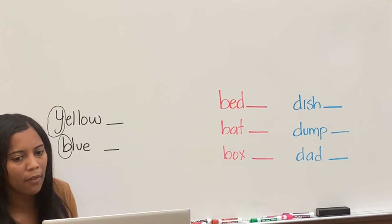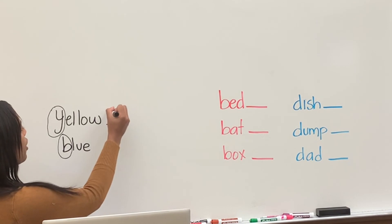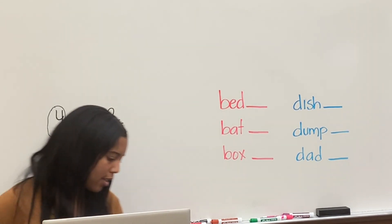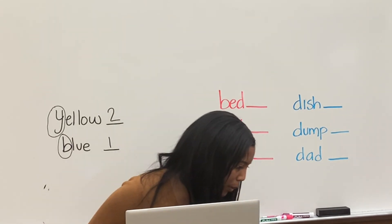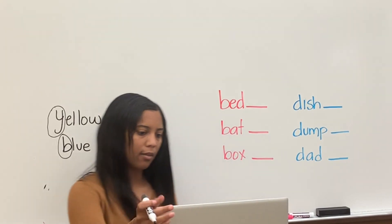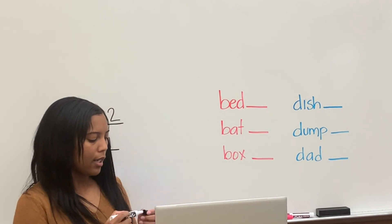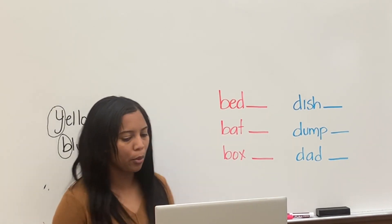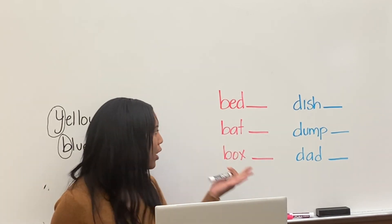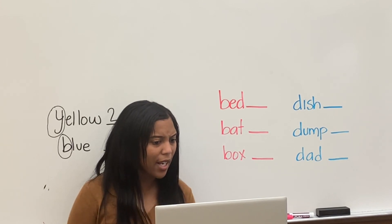Evan, which one would go first? B. So blue would be first and then yellow would be second. That is correct. Now we're going to learn a different way to put words in ABC order. Look at my words here: I have bed, bat, and box. They all start with the same letter.